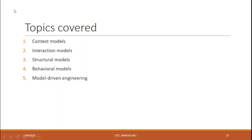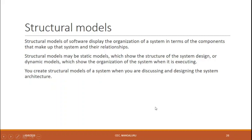In the structural model we have class diagrams, generalization, and aggregation. First, let us see the definition of the structural model. The structural model of software displays the organization of the system in terms of the components that make up the system and their relationships.